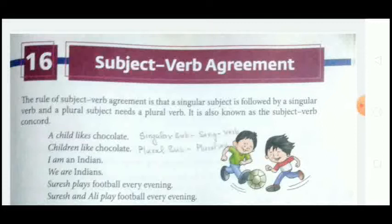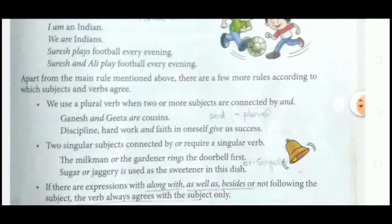'Suresh and Ali play football every evening' — here 'Suresh and Ali' are two persons, meaning it is plural, so the verb 'play' is also in plural form. So: if the subject is singular the verb will be singular, and if the subject is plural the verb will be plural. Apart from the main rule, there are a few more rules according to which subject and verb agree.